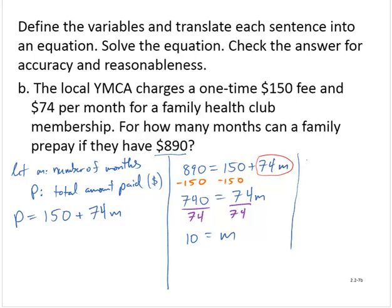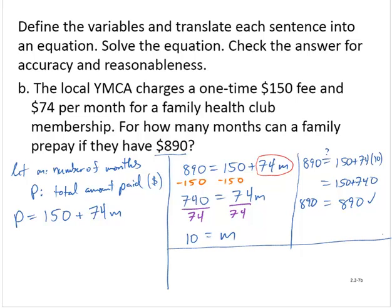Let's check for accuracy. Is 890 equal to 150 plus 74 times 10? Well, order of operations, 74 times 10 is 740. And 150 plus 740 is 890. So that checks out. And my conclusion would be that the family can prepay for 10 months.